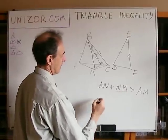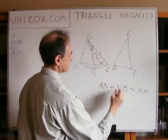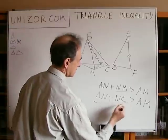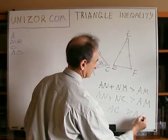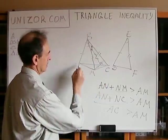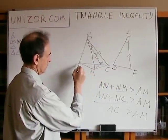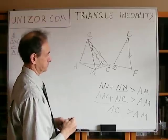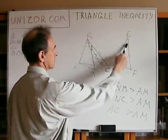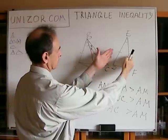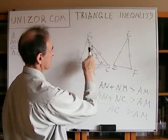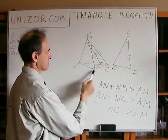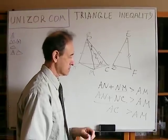Therefore the length of AC equals AN plus NC. But AN plus NC, since these are two sides of triangle ANM — wait, AN plus NM is greater than AM by triangle inequality. Since NM equals NC, we have AN plus NC is greater than AM. But AN plus NC is AC. So AC is greater than AM, which is exactly what needed to be proved. If this angle is smaller than the other angle, we constructed a congruent triangle inside, and using this construction we showed that AC is greater than AM.